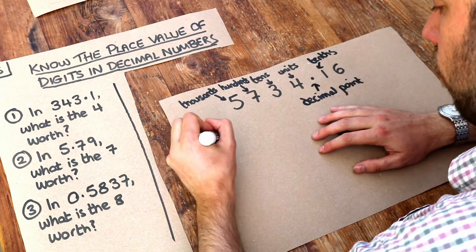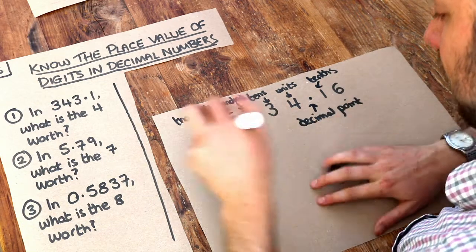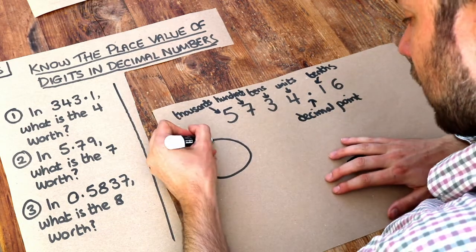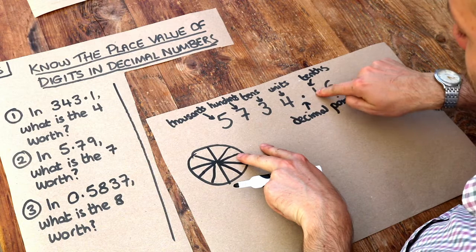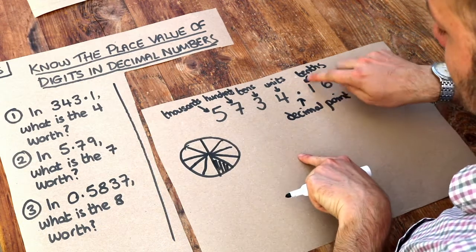If I had a whole thing and I wanted one tenth, then if I divide this into ten pieces, I just want one of those tenths. I've divided that whole up into tenths and I just want one of them.